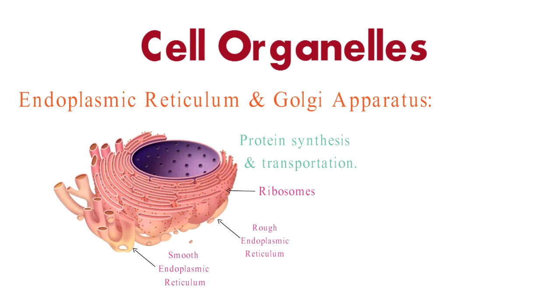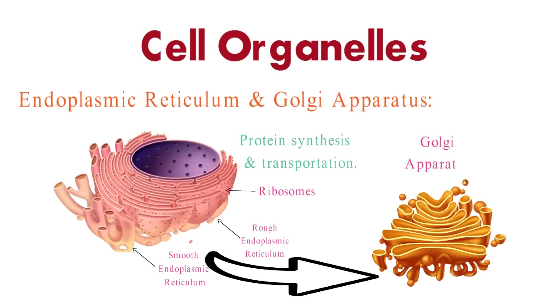After proteins are synthesized in the ER, they move to the Golgi apparatus, which modifies, packages, and distributes them to various parts of the cell or for export outside the cell.